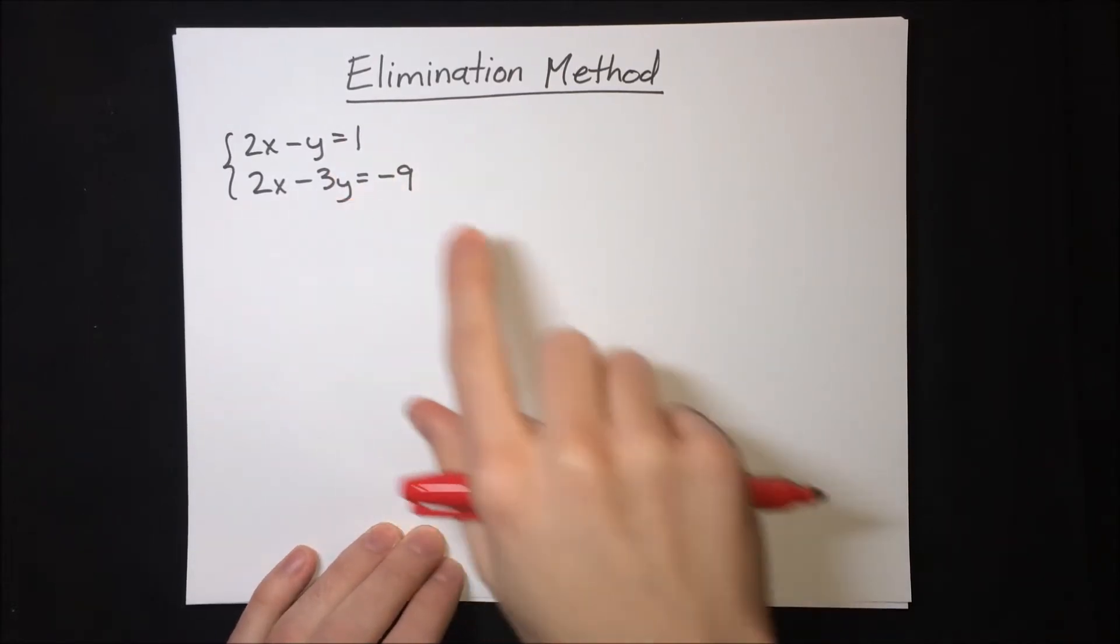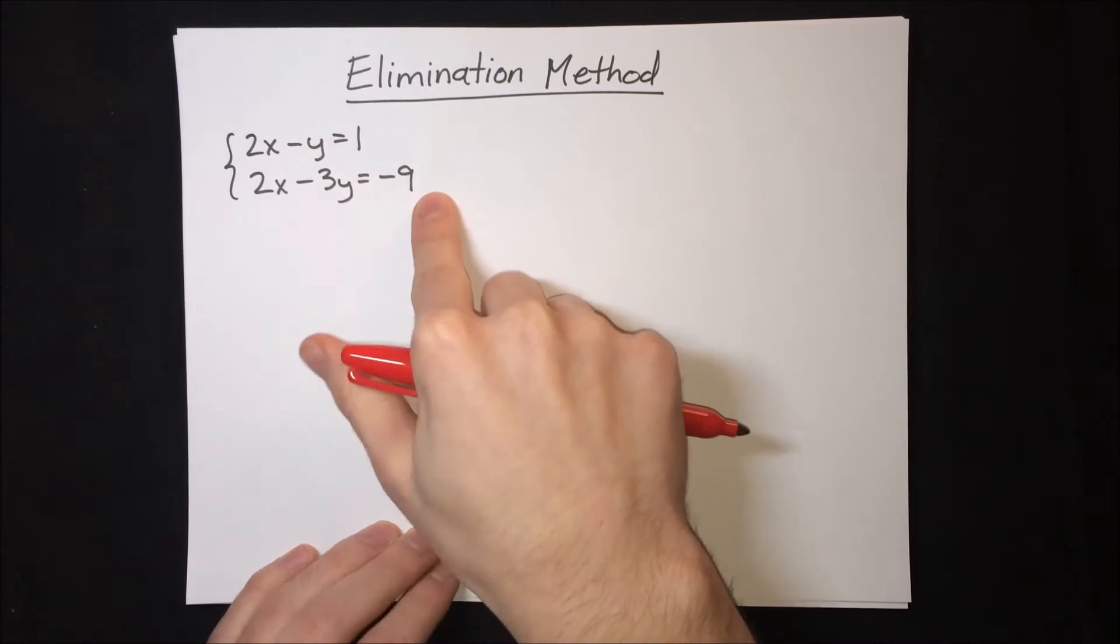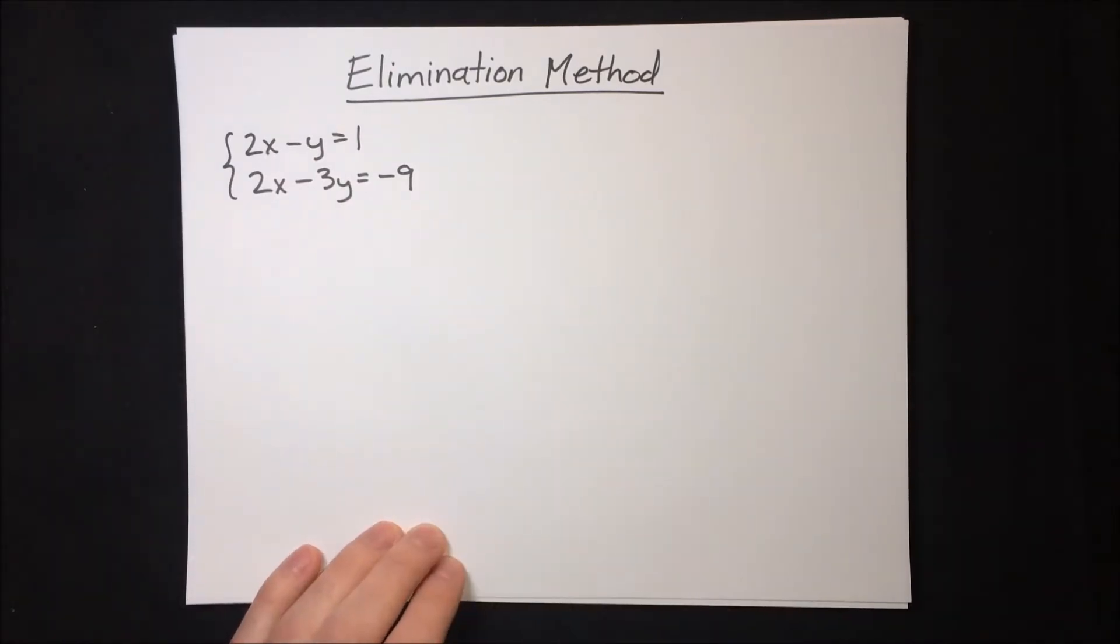The goal of elimination is to multiply each equation by some number so that one of the variables cancels when we add.